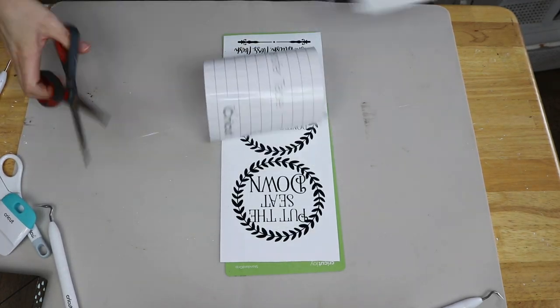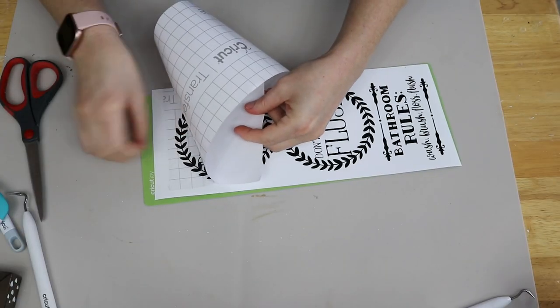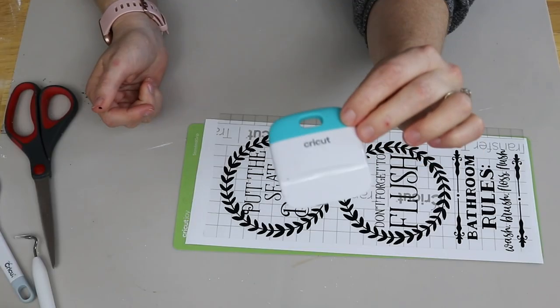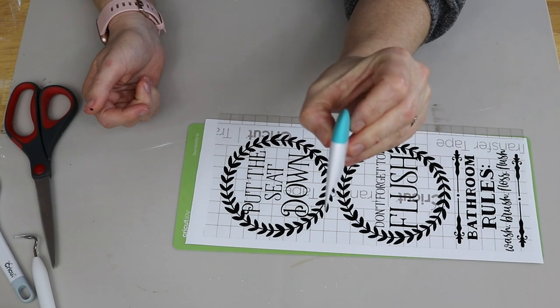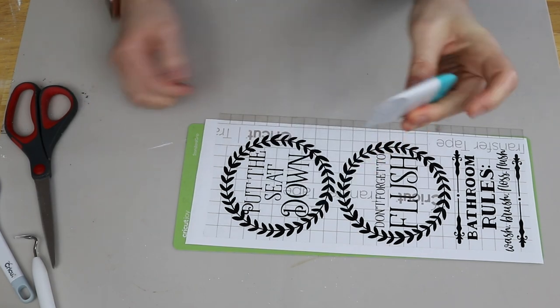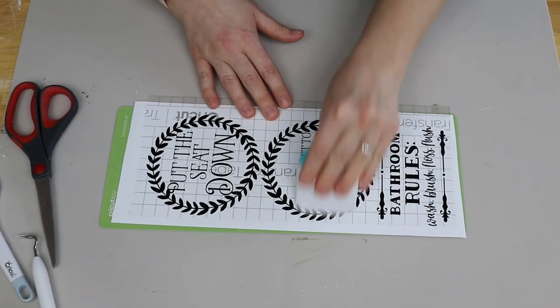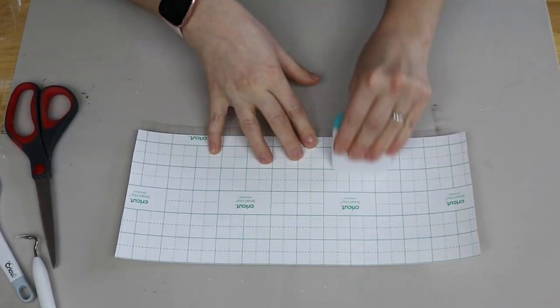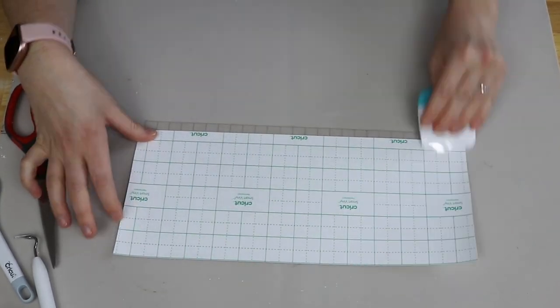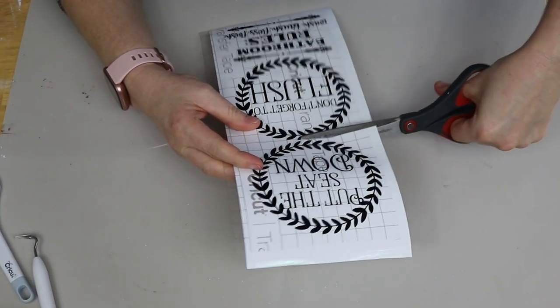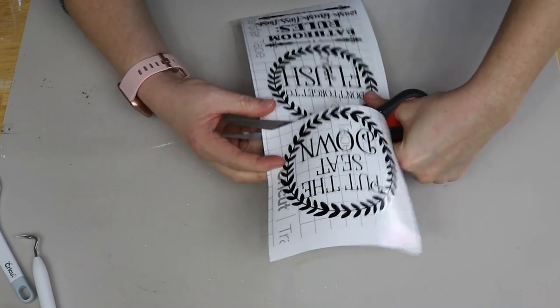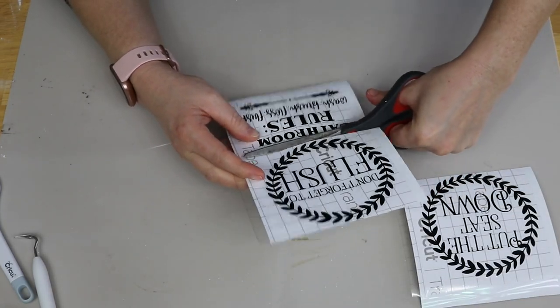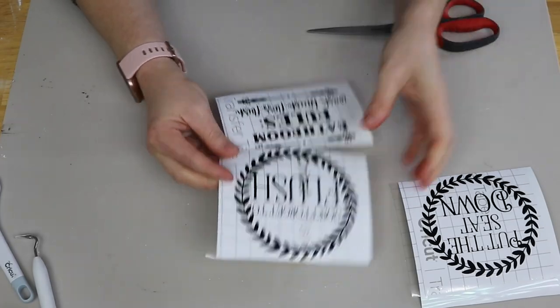So after that I am just going to be taking my transfer tape and I'm cutting it to size to fit over all three of those images and I'm just going to apply that on there in one big sheet and then I'm taking my Cricut scraper tool and I'm just going to scrape everything with some good force on there. I just want to make sure that the vinyl has a chance to adhere to the transfer tape so it makes it easier to transfer to the projects. And then I'm just going to cut each of those three images away from one another so that way I am ready to start making my bathroom decor.